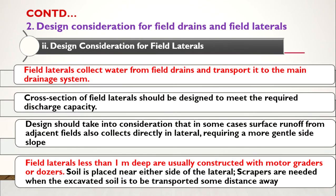Now we will move on to field laterals. Field laterals collect water from the field drains, which are smaller. They transport or discharge the water to another main channel. Field laterals are less than one meter deep and are usually constructed with motor graders or bulldozers.